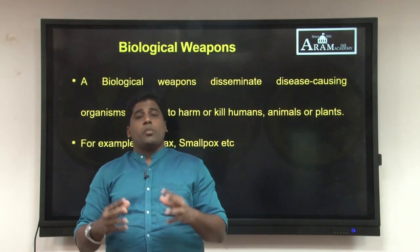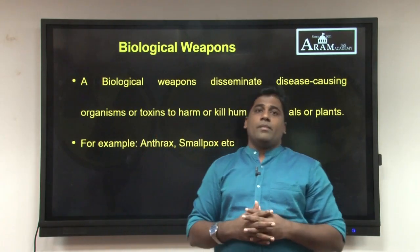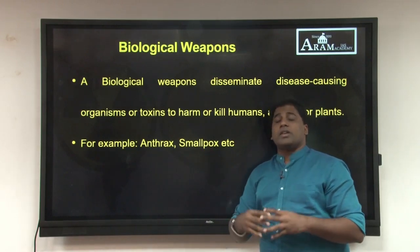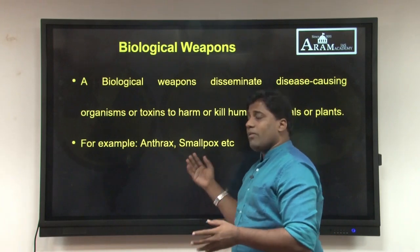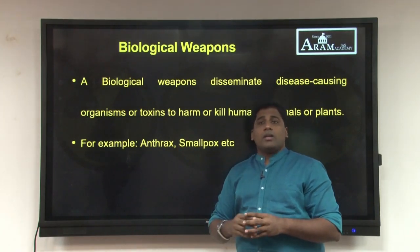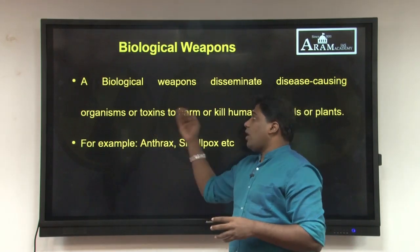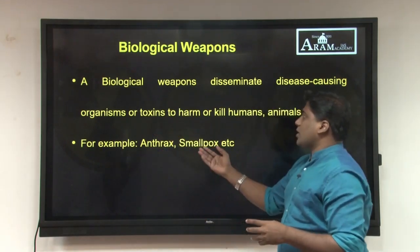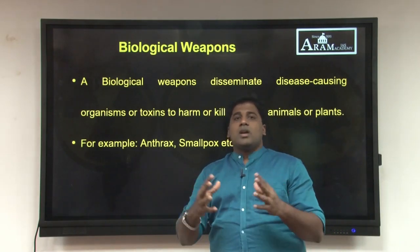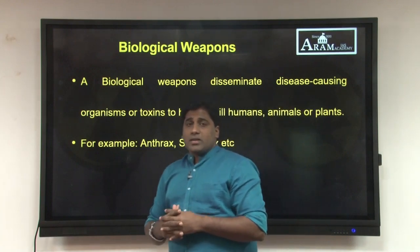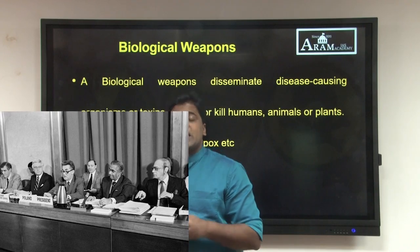Anthrax is a very serious infection caused by Gram-positive bacteria, and Smallpox is a virus. These types of diseases are deliberately created by disseminating those organisms or toxins that kill or cause very great harm to humans. This is what constitutes a Biological Weapon. We have the Biological Weapon Convention of 1975.